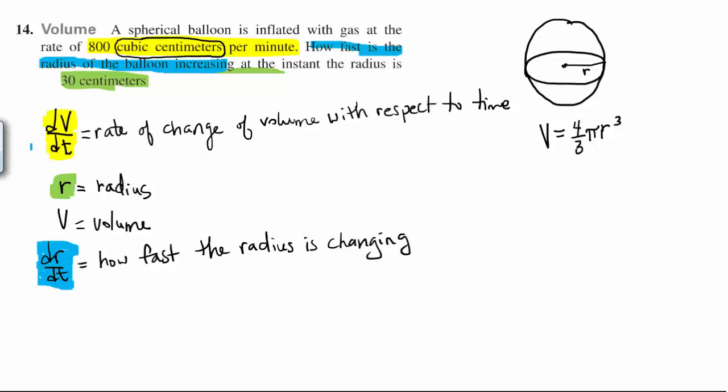So we need the relationship between dV/dt and dr/dt. We have the relationship between V and r, so we're going to differentiate. We're going to take the derivative with respect to t of the left side and the derivative with respect to t of the right side.